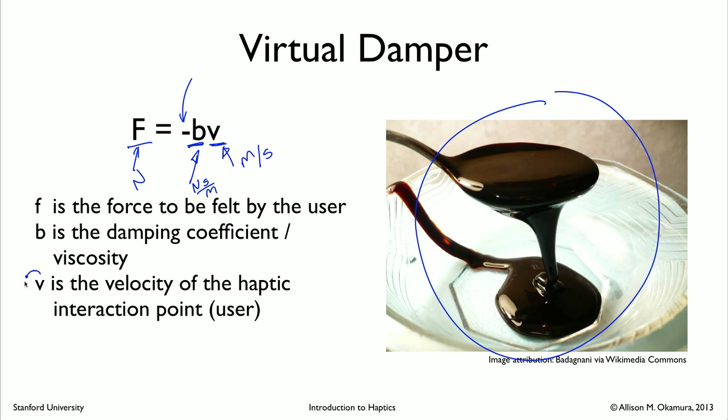I'll also point out that the method for computing the velocity is very important. Because the velocity is measured by taking a difference in position and dividing that by a change in time, if there are small variations in position just due to noise from your sensor, those are going to be amplified in the velocity signal.